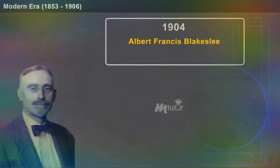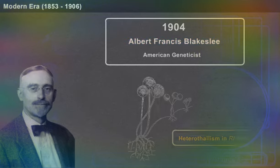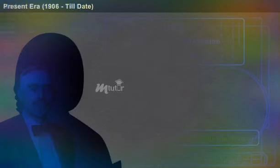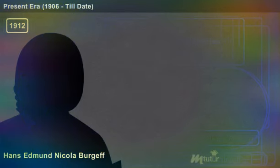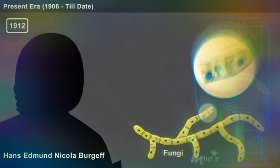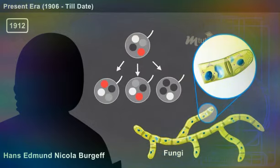In 1904, Albert Francis Blakeslee, an American geneticist, identified heterothallism in Rhizopus. During 1912, Hans-Edmund Nicolai Bergey reported the fusion of dissimilar nuclei within the cells of a fungus. He called this phenomenon heterokaryosis.